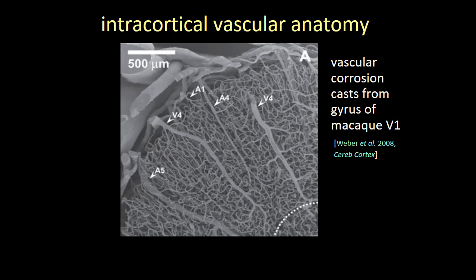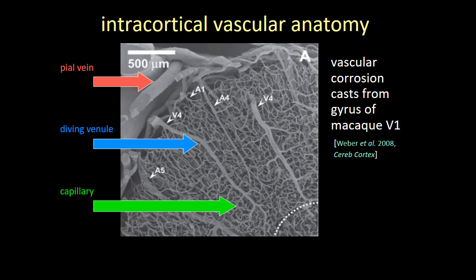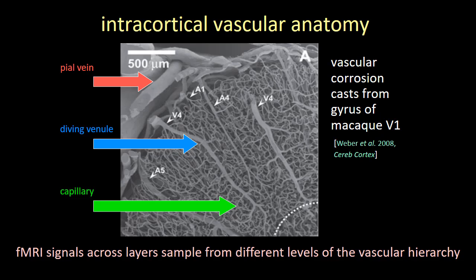Moving on to laminar analysis: the first step is to sample the functional activity across cortical depths. We need to take into account the different levels of the intracortical vascular anatomy. We have large draining veins that drain deoxygenated blood from large cortical domains, diving venules that penetrate perpendicularly into the cortex and can cause laminar coupling of signals, and the randomly oriented dense capillary bed in the parenchyma. Since capillary density varies a lot across cortical depths, the fMRI signals across layers sample from different levels of the vascular hierarchy, and we need to account for this in our analysis.